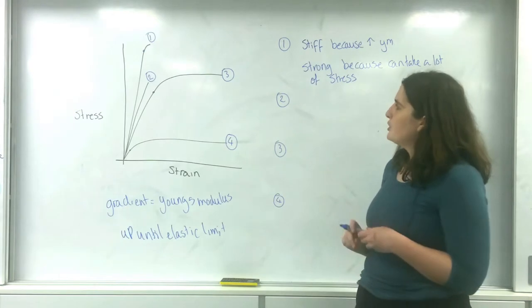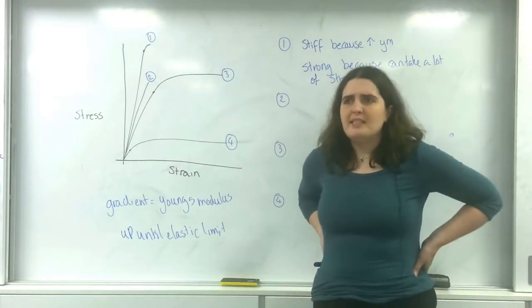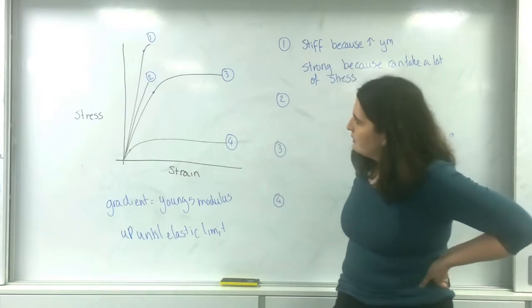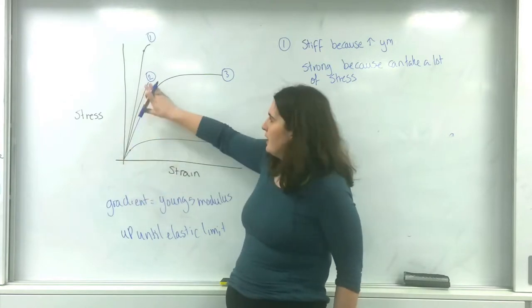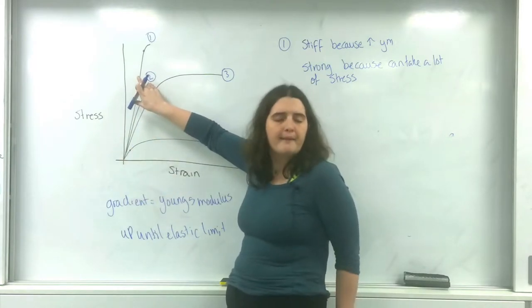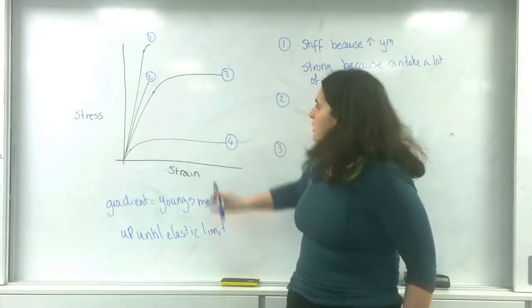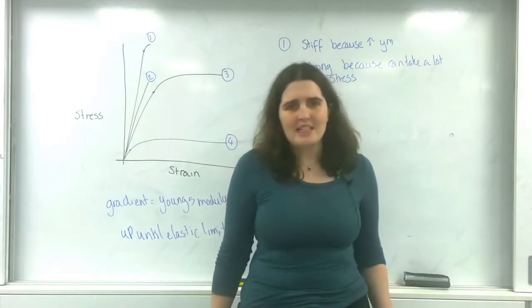Now, material number two does not have a plastic region at all. There is no permanent deformation. It is a material that will be given a force, and then eventually it will smash, it will break. This is what the end of this line is. It's the point at which the material fails. And it doesn't even get to a point where it's plastically changing. It never permanently deforms.